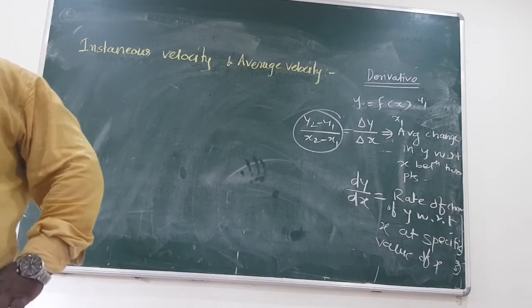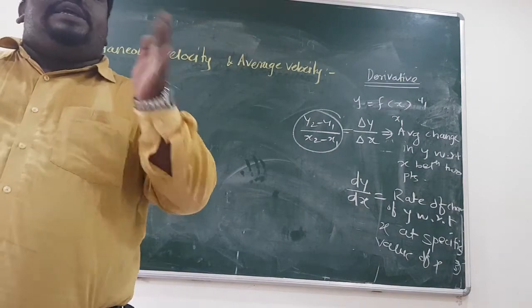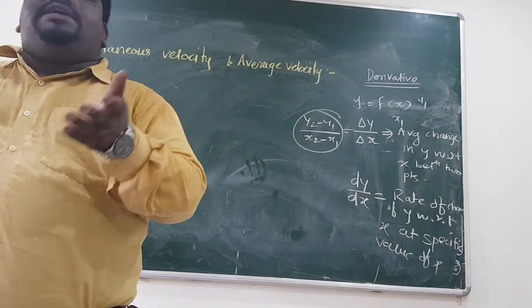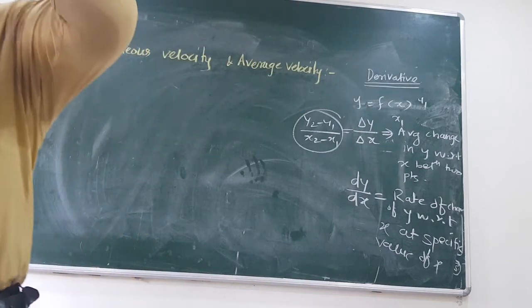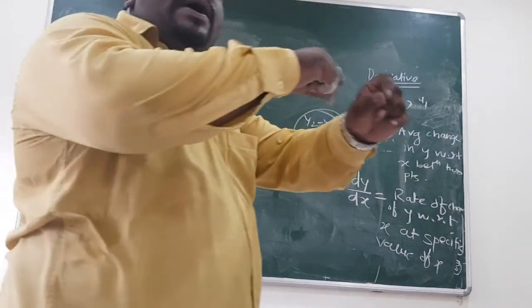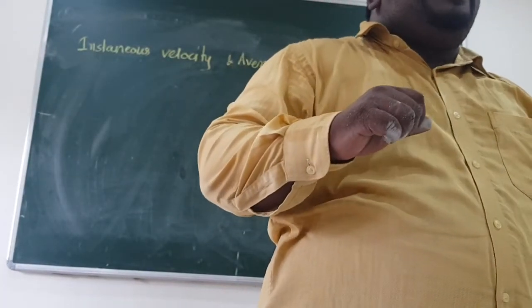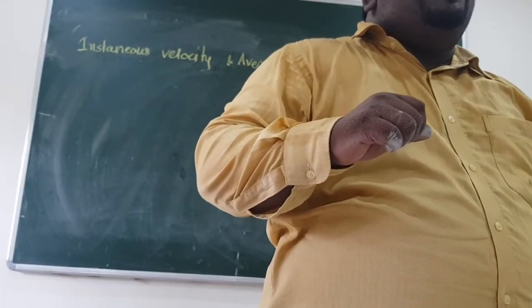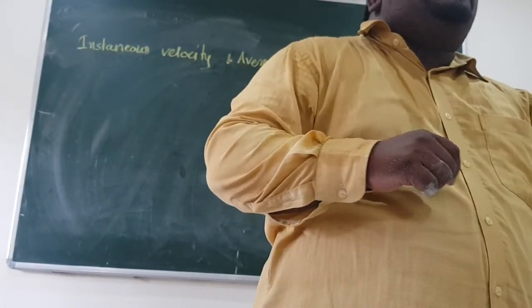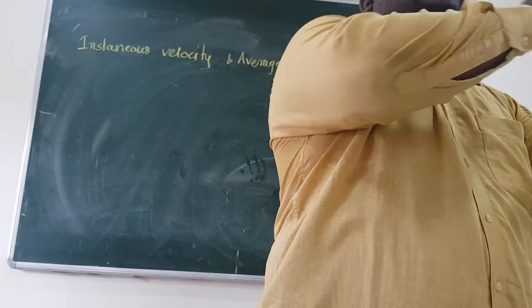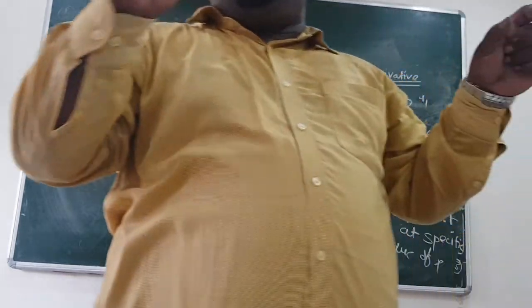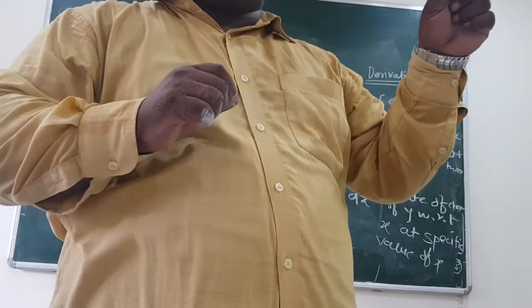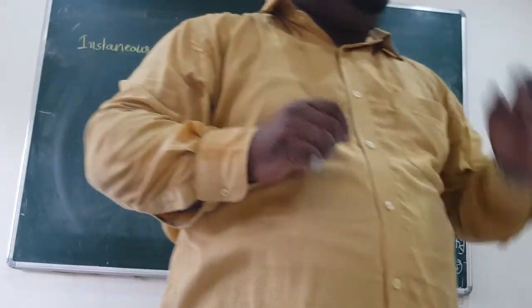Now I am not interested in what is average velocity between Kudal to Henkowli. You tell me what is your velocity when you were crossing Ores. So at a particular value of x, I am interested to find out what is the velocity value — and that is called instantaneous velocity.